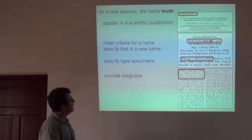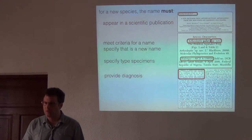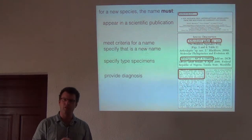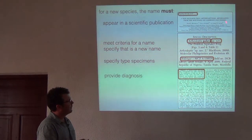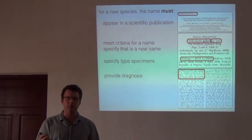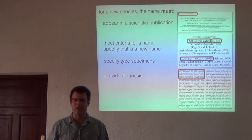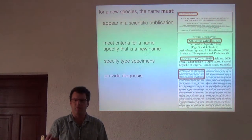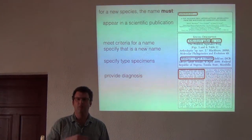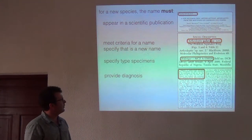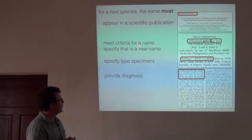Really important is that you have to specify that it's a new name. In this journal it's indicated as sp. nov. The reason this is important is that just because you write a name somewhere in a paper doesn't mean it's now a new species name — there's never been a description. So it has to satisfy criteria: one is that it's formed properly, which Dr. Focum mentioned, and another is that it's actually specified as a new name.